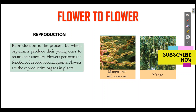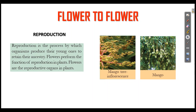What is reproduction? Reproduction is the process by which organisms produce their young ones to retain their ancestry. Flowers perform the function of reproduction in plants.